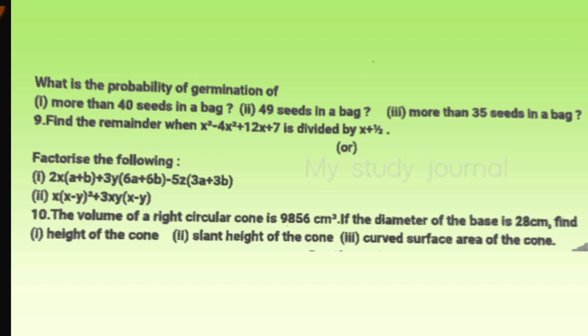Then ninth one: find the remainder when the following polynomial is divided by x plus half. We have an internal choice. I did not attempt the first one and I took the second one as an option, which was to factorize the following. I felt that was easy. Tenth one: the volume of a right circular cone is given. The diameter of the base is 29 centimeters. Find the height of the cone, slant height of the cone, and curved surface area of the cone.